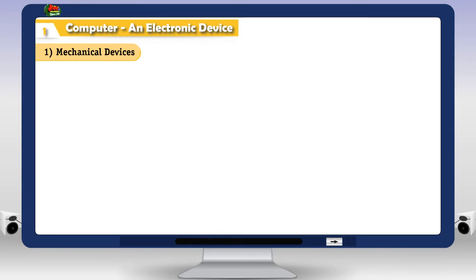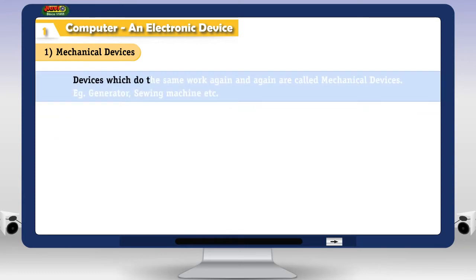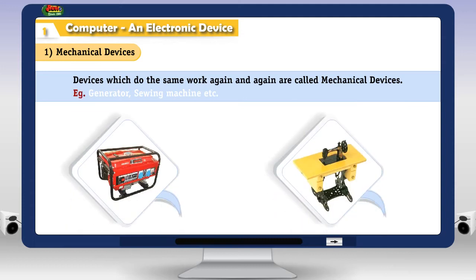Mechanical devices. Devices which do the same work again and again are called mechanical devices. Example, generator, sewing machine etc.